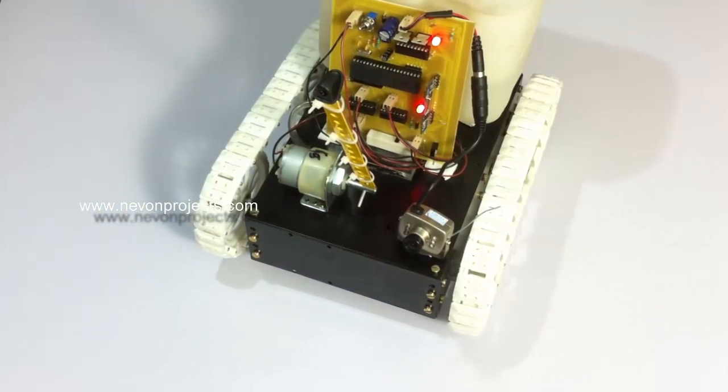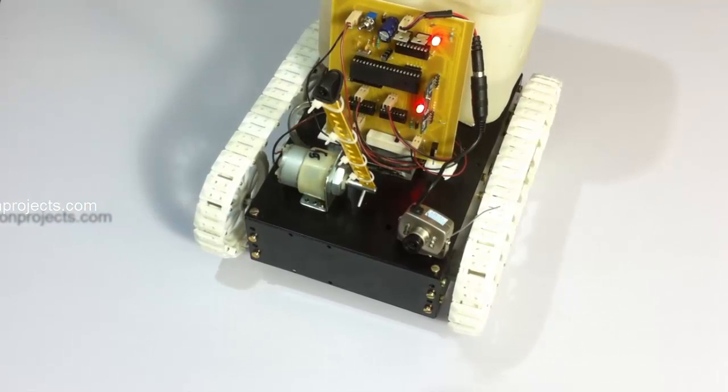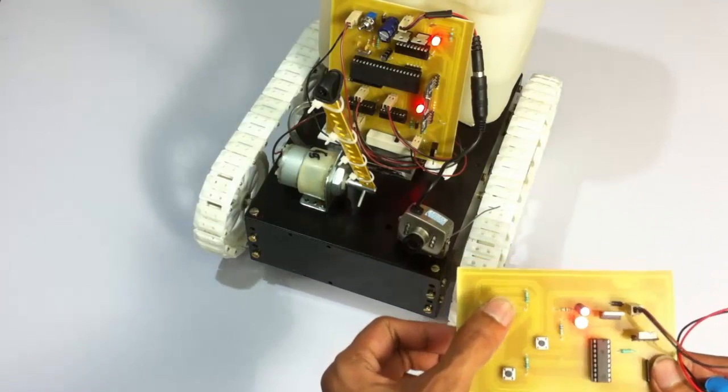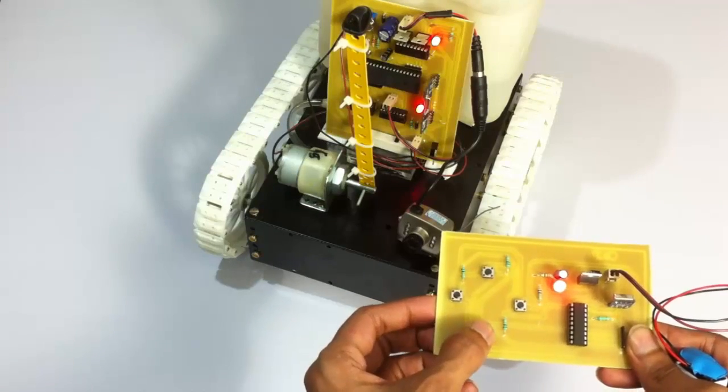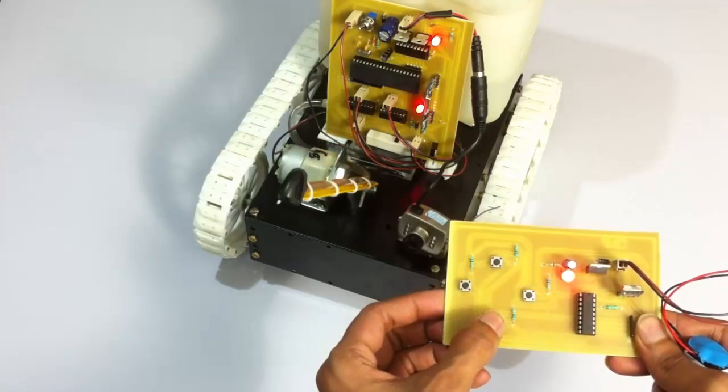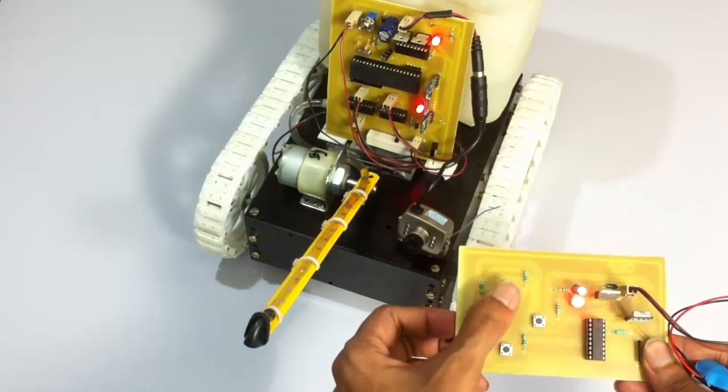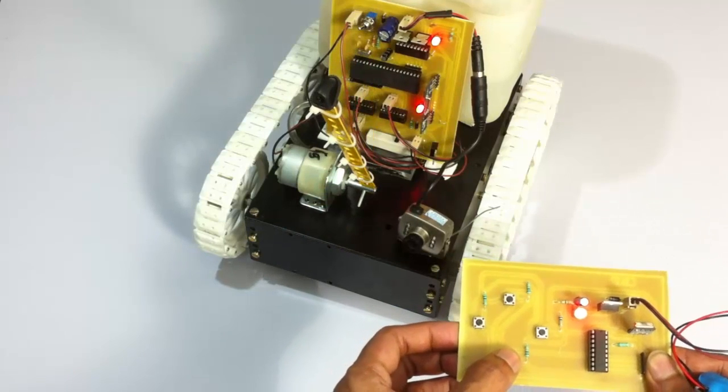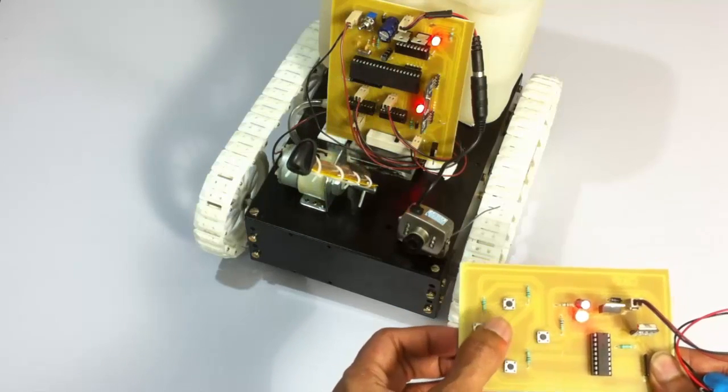Now using the same remote buttons, we can control the spray arm. Let's move it in upward and downward directions. As you can see, once we go into spray mode, the same buttons can be used to control the sprayer arm. Now let's see how the spray works.